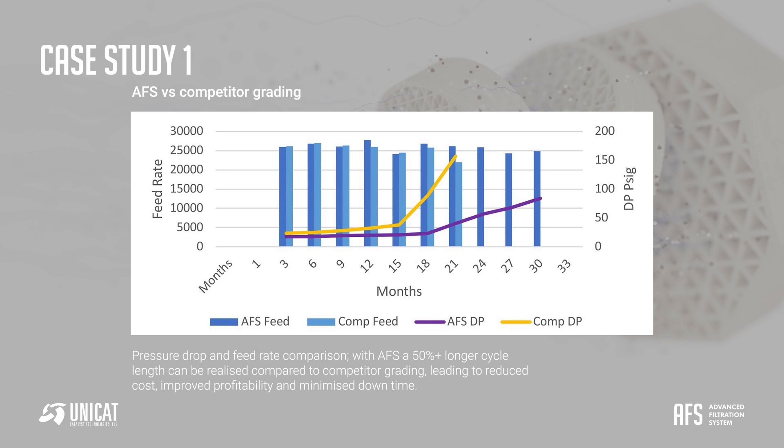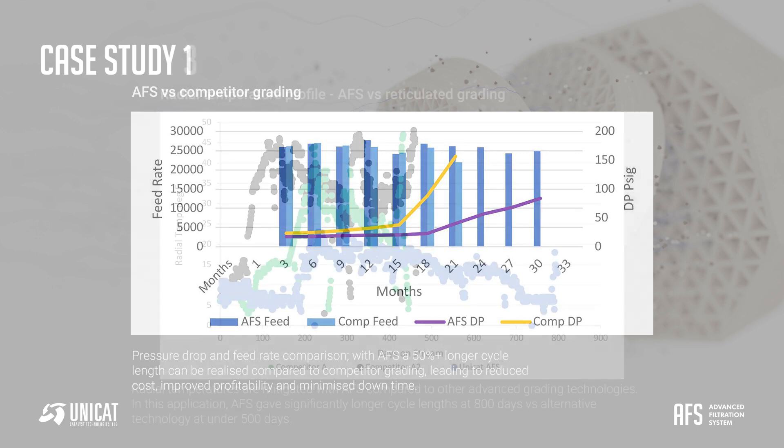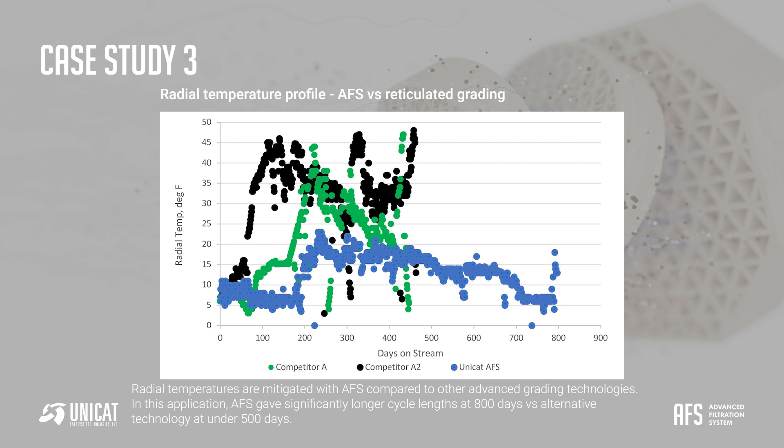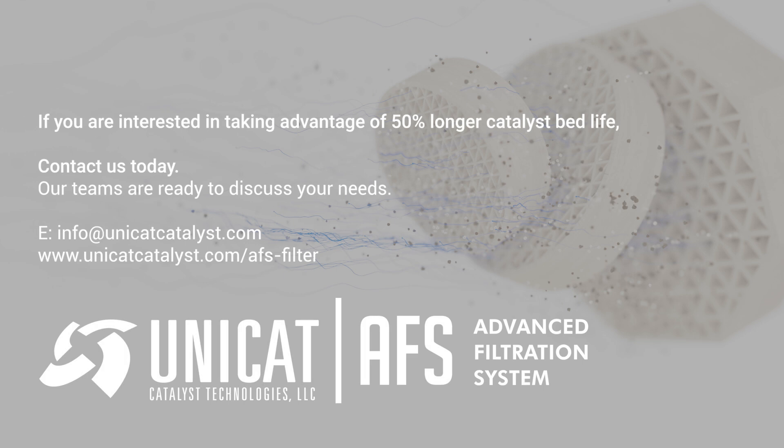Leading to reduced cost, improved profitability, and minimized downtime. Radial temperatures are mitigated with AFS compared to other advanced grading technologies. In this application, AFS gave significantly longer cycle lengths at 800 days versus alternative technology at under 500 days.